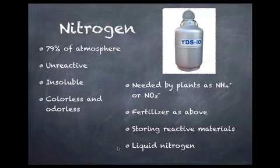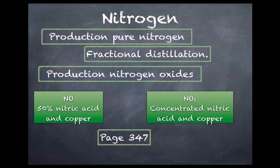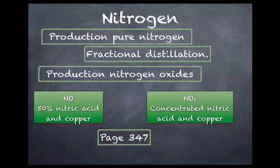Now we're going to look at the production of nitrogen. Pure nitrogen, in a commercial sense, is made by the fractional distillation of air. Because air is 79% nitrogen, what we can do is cool down air until it all becomes liquid and slowly heat it off until nitrogen comes off. We've got a diagram for that on the next slide. So fractional distillation of air is how we get pure nitrogen.